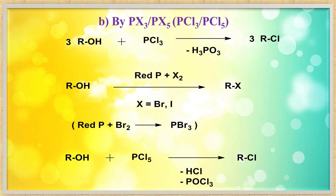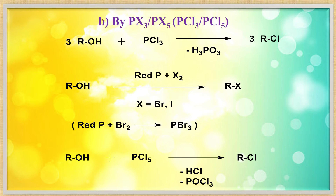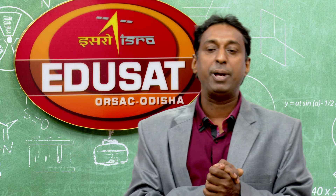Next method — using PX3 or PX5: PCl3, PBr3, or red phosphorus + halogen. When using PCl3: 3 R-OH + PCl3 → 3 RCl + H3PO3. When using PCl5: R-OH + PCl5 → RCl + POCl3 + HCl.